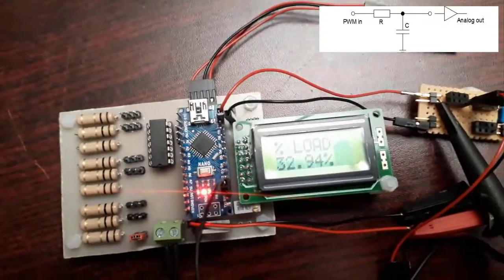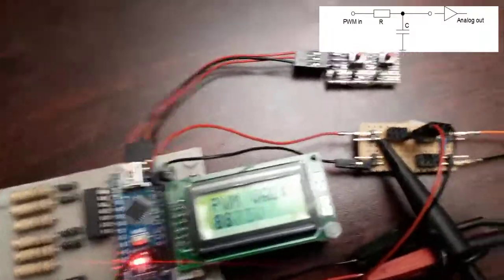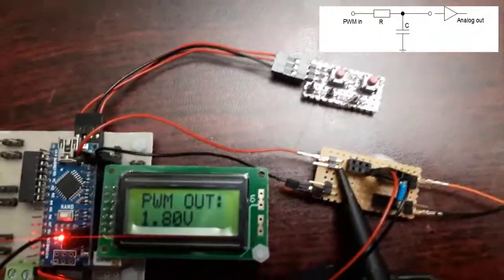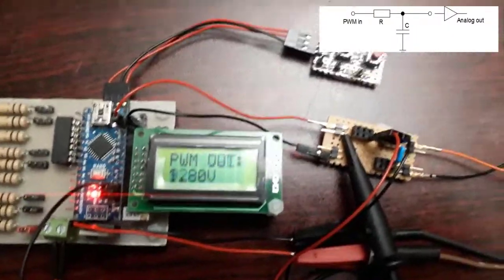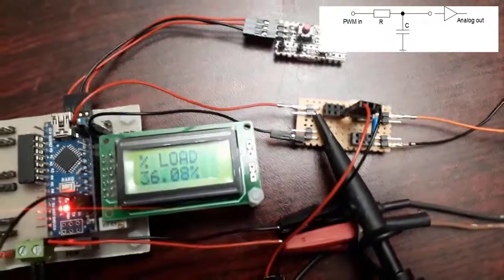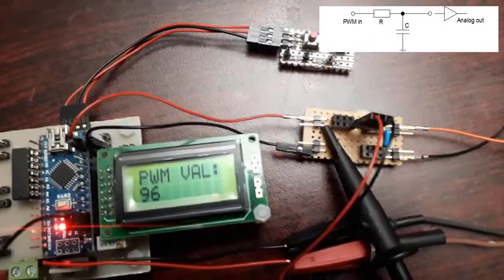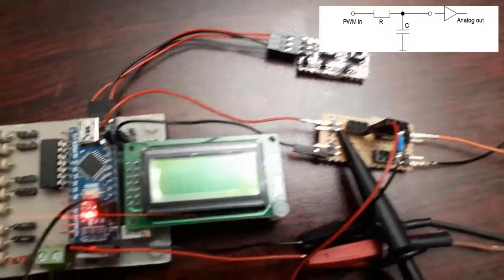You're not going to have those switching heat that is created because of the high current switching on and off. That is basically the advantage of using simple RC network circuit like this. But, obviously, you can use a dedicated digital to analog converters.